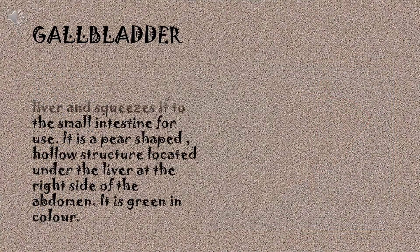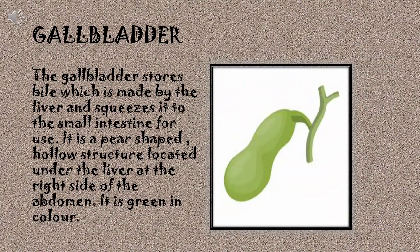Gallbladder. The gallbladder stores bile, which is made by the liver, and squeezes it into the small intestine for use. It is a pear-shaped hollow structure located under the liver at the right side of the abdomen. It is green in color.